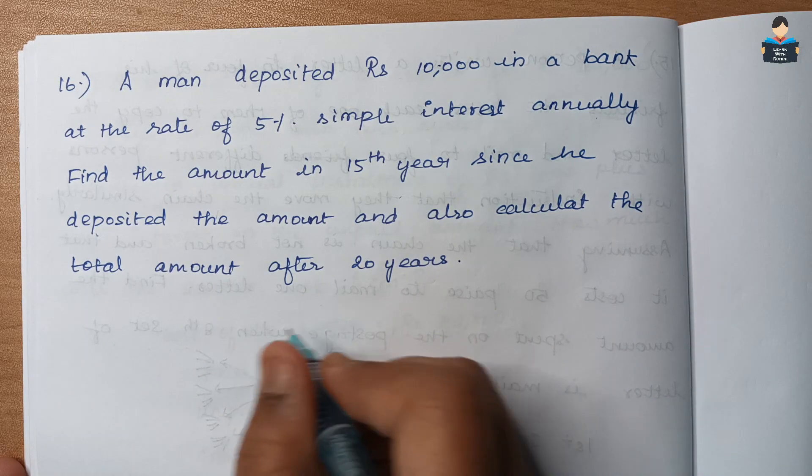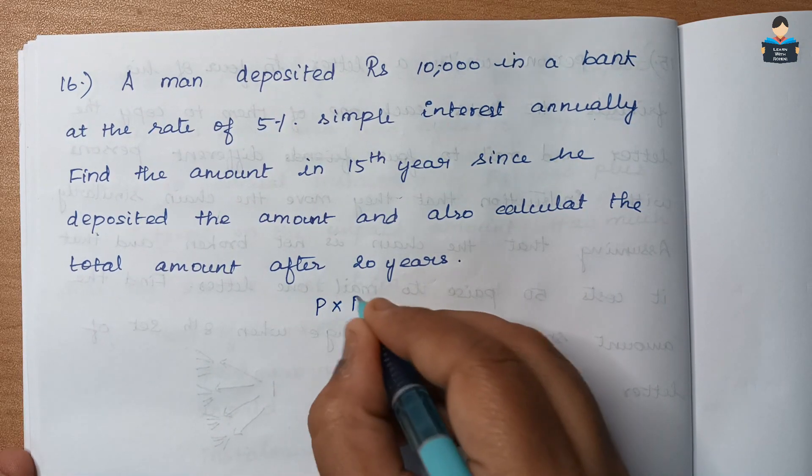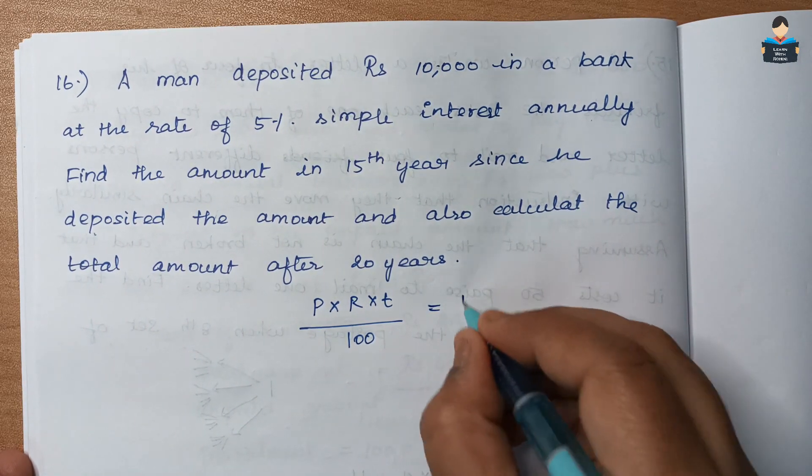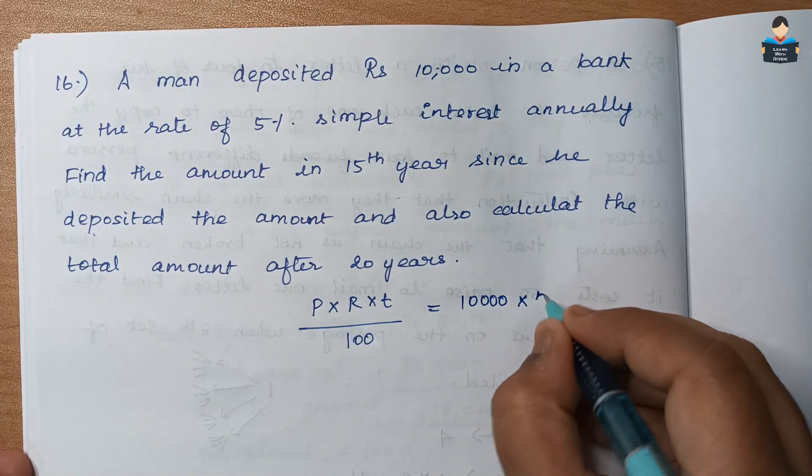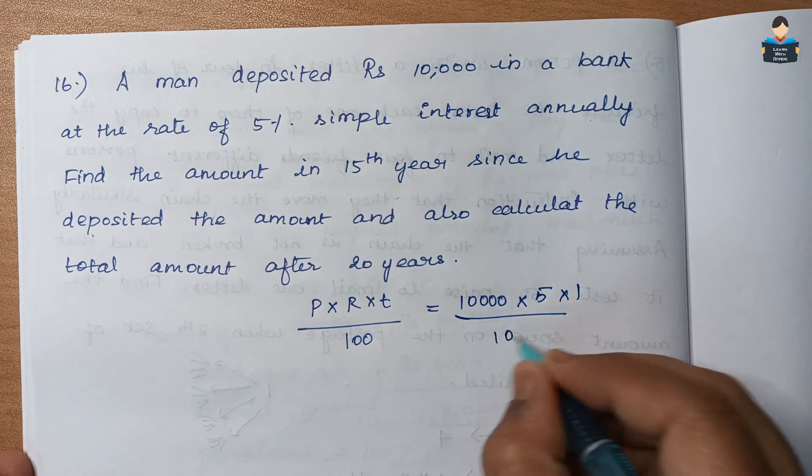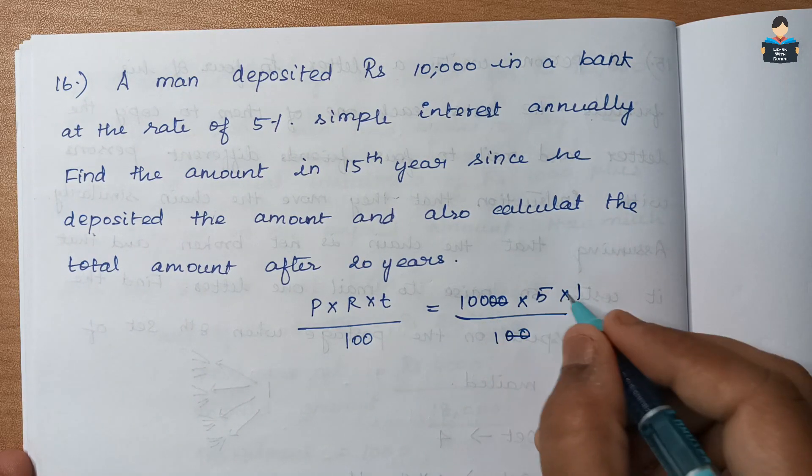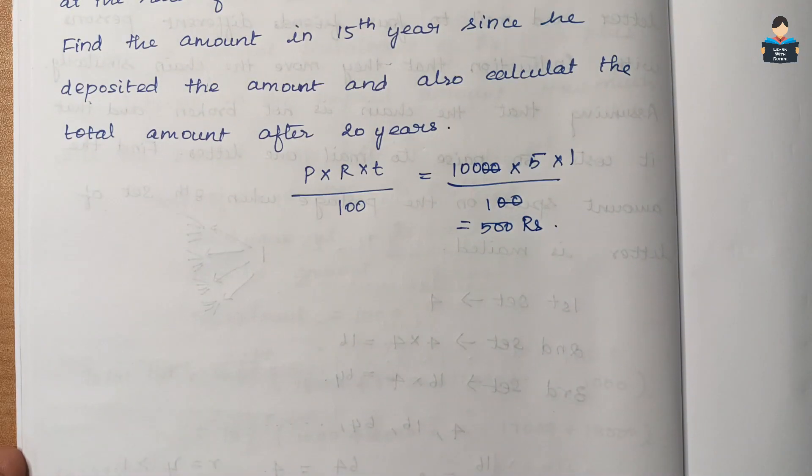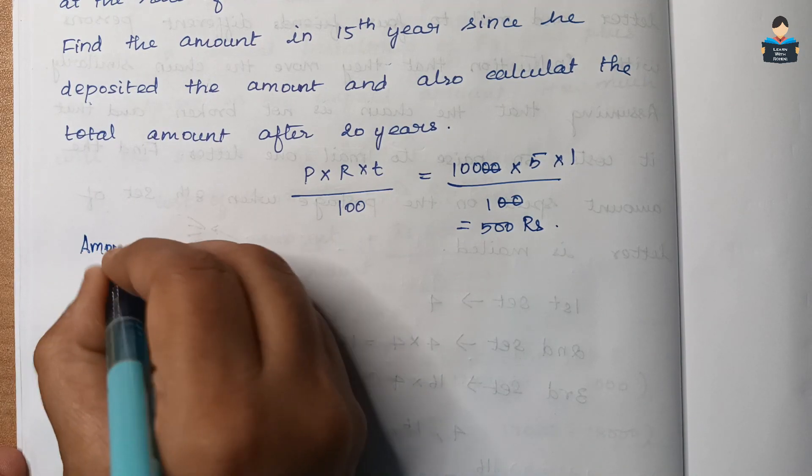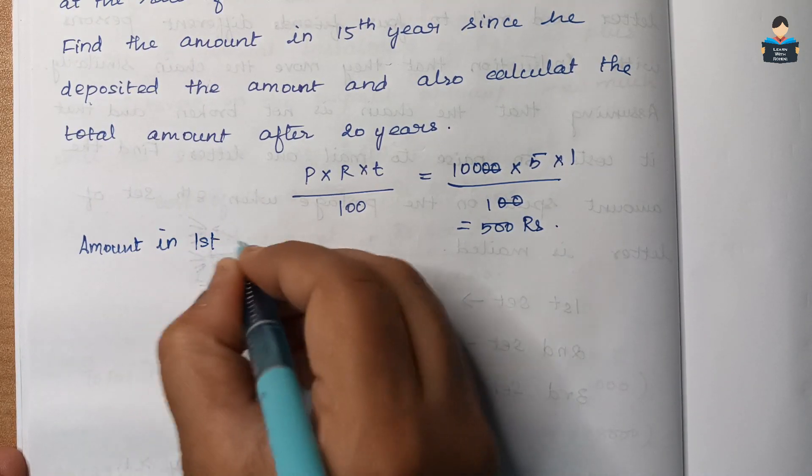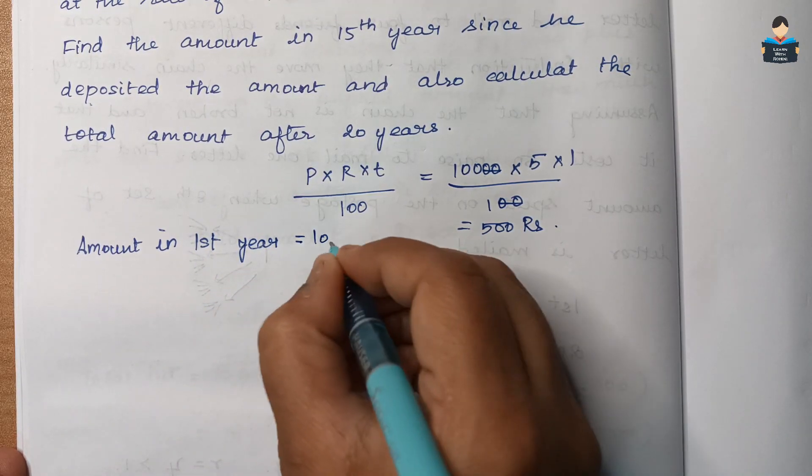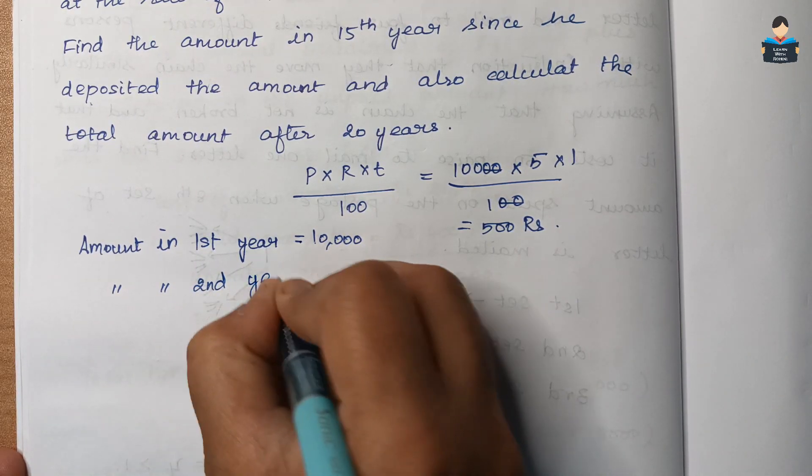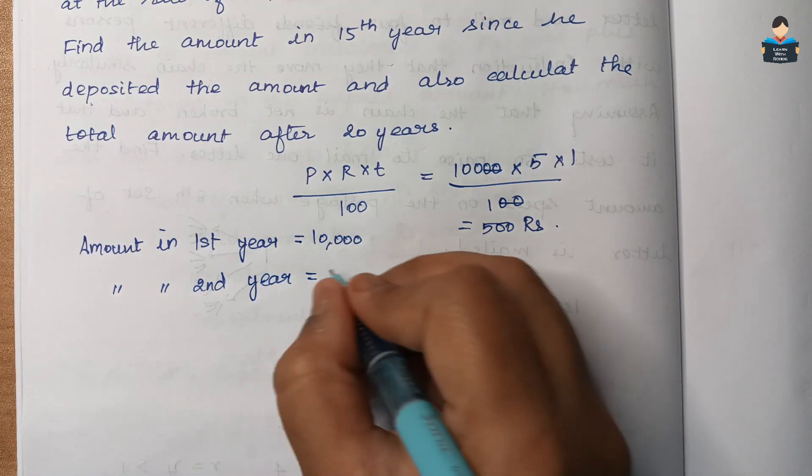Simple interest equals principal into rate of interest into time by 100. So principal amount is 10,000 into rate 5 into 1 by 100. This gives 500 rupees as the interest. Amount in the first year is equal to 10,000 plus 500 equals 10,500.